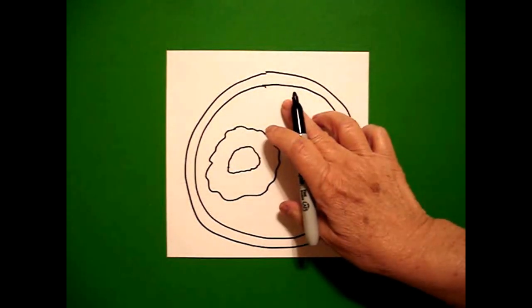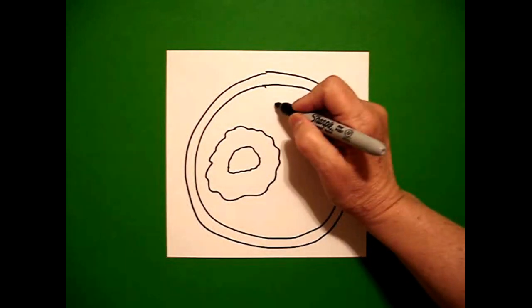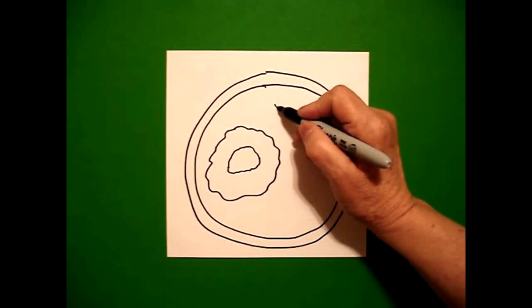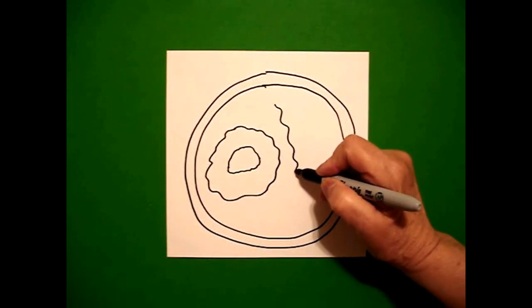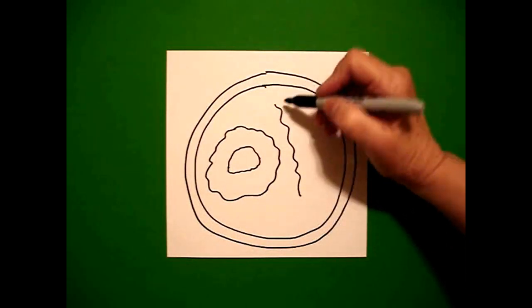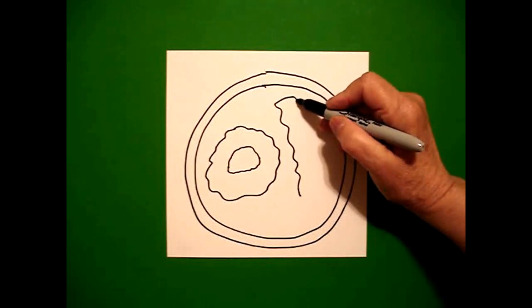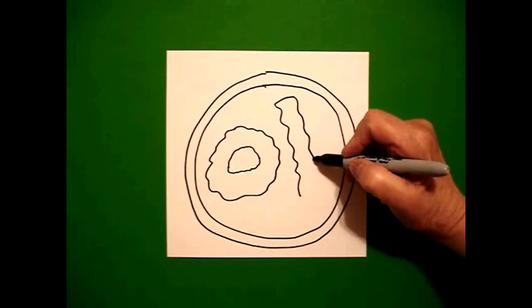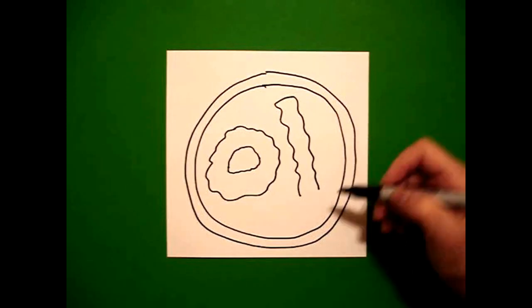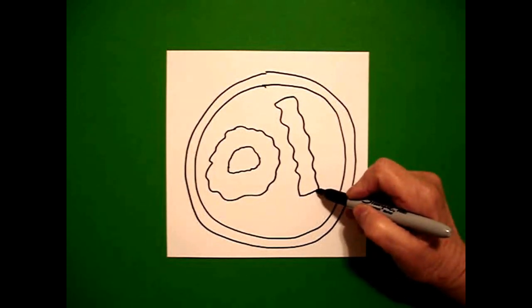Right next to that, up here on the top, I put a dot and I draw a wavy line down. Come back to the dot, draw a slightly curved line, and now draw another wavy line down. And now connect the two.